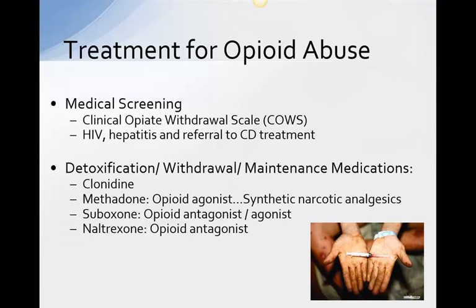The first medication is Clonidine, which reduces norepinephrine release and is most effective in suppressing the autonomic signs and symptoms from abstinence or tapering. It has anti-craving effects. Clonidine combined with naltrexone is the best combination for treating opioid withdrawal — it's rapid, decreases hypertension, and shortens the withdrawal timeframe by about five days.